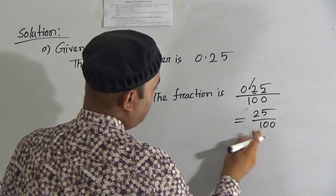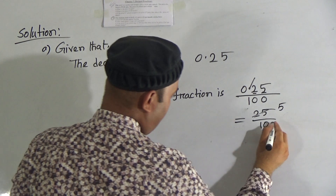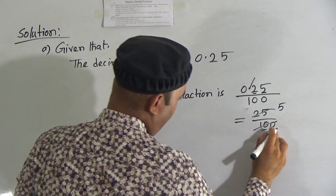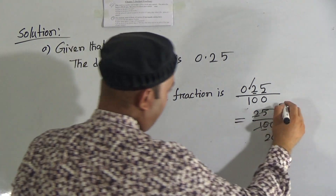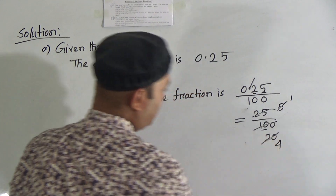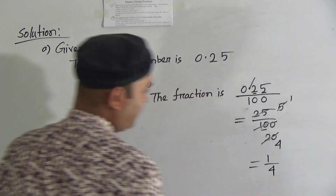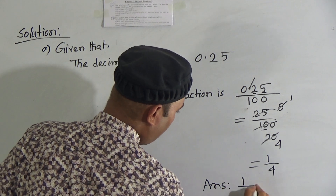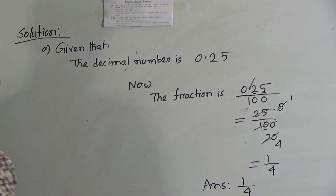Now make it the lowest term. We know that 5 fives are 25, and 5 twenties are 100. Again, 5 ones are 5 and 5 fours are 20. So the fraction is 1 out of 4. The answer is 1 out of 4 — that is the general fraction of 0.25.